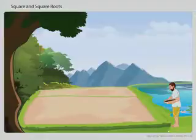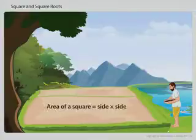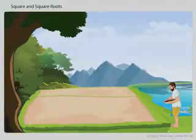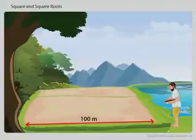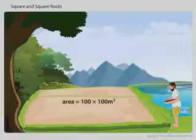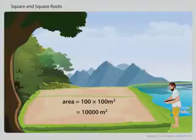You have already studied that the area of a square equals side into side. If the length of side of the square field is 100 meters, its area equals 100 into 100 meter square, which equals 10,000 meter square.